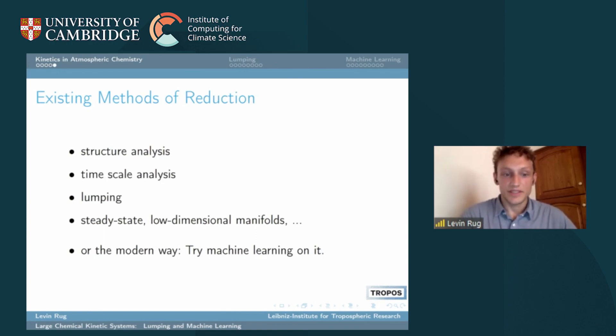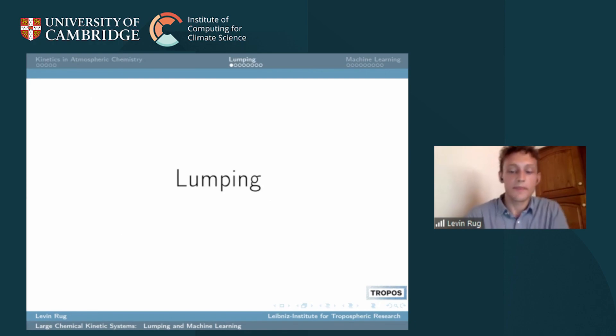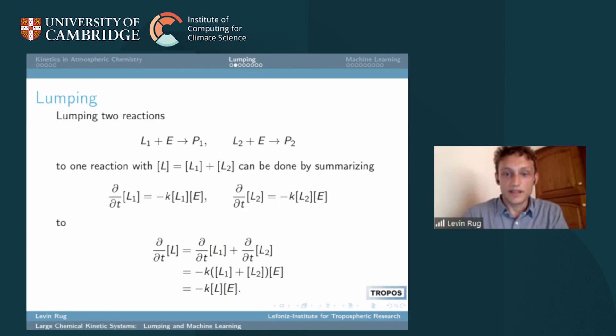We updated one method named lumping to be applicable to state-of-the-art mechanisms and we tried machine learning with a very simple approach but we do it very carefully. Lumping is a method which is analytical, so it relies on the structure of the ODEs. We search for reactions that look very similar like these two reactions in the second line.